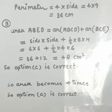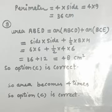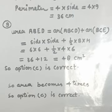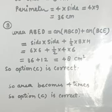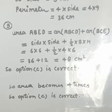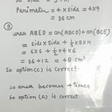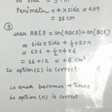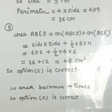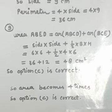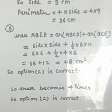Question number 9: we need to find the area of figure ABED, which equals the area of square ABCD plus the area of right-angled triangle BCE. Area of square = side × side = 6 × 6 = 36. Area of triangle = ½ × base × height = ½ × 4 × 6 = 12. Total = 36 + 12 = 48 cm². Option C is correct.